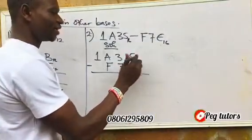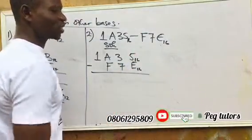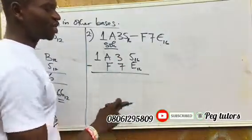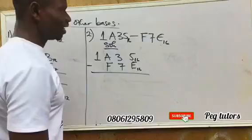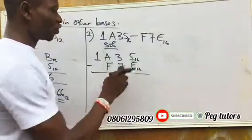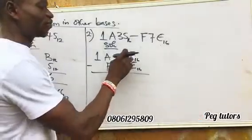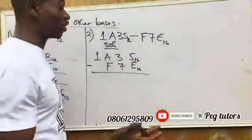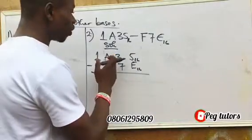Remember, this is base 16, we are operating in base 16. 5 is smaller compared to E, which is 14. E is 14, so 5 is smaller than 14. So if you subtract 14 from 5, it will not work. So what you do, you borrow from here as usual, the way you operate in your base 10, you borrow from here 1.